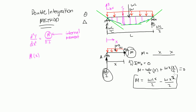Solving for M gives: M = WLX/2 minus WX²/2. This is the equation for the internal moment over span AB and will give you the moment at any distance X. For example, to find the moment at mid-span, plug in X = L/2. To find it at a quarter of the way from A, plug in X = L/4.